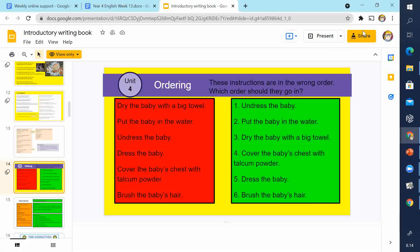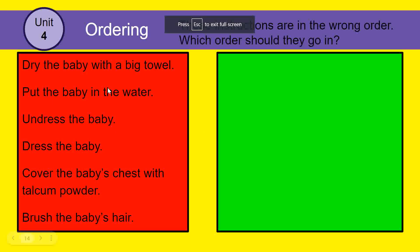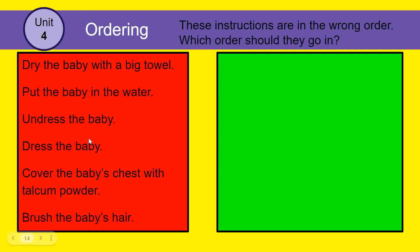Let's look at some instruction texts. Here is just the method for how to wash a baby, but all the steps are in the wrong order: dry the baby with a big towel, put the baby in the water, undress the baby, dress the baby, cover the baby's chest with talcum powder, brush the baby's hair. Which would go first? Undress the baby — that's number one. The steps are numbered, which is even better than bullet points.